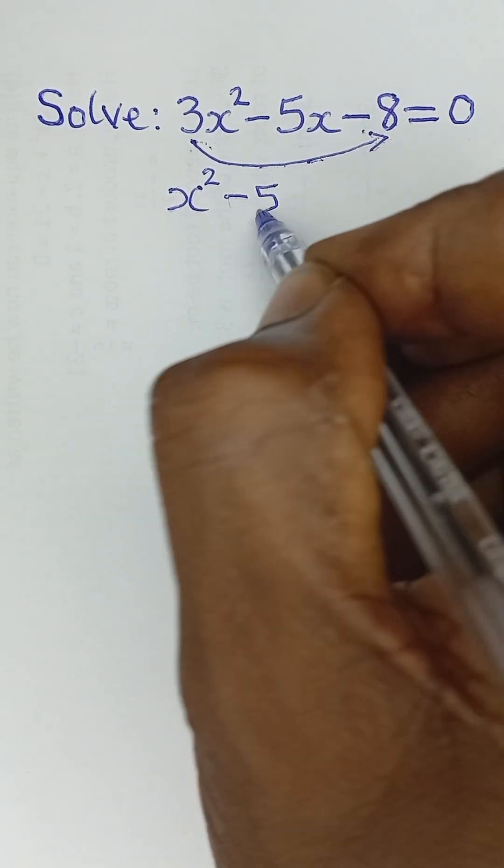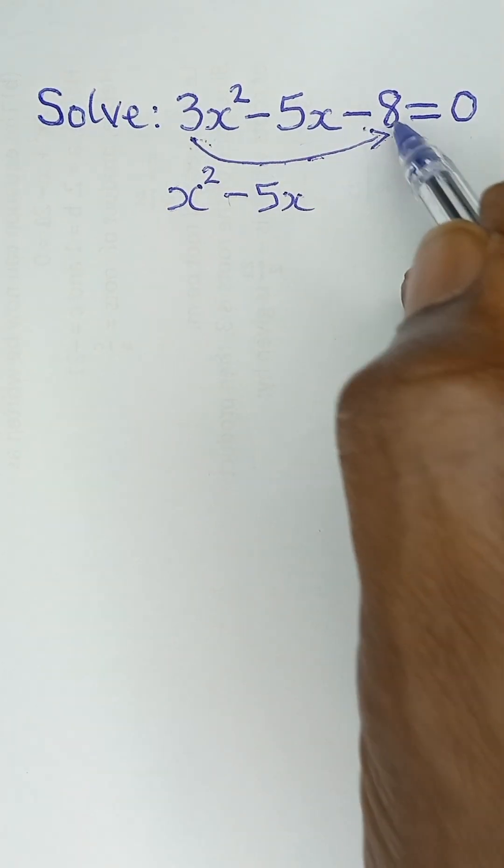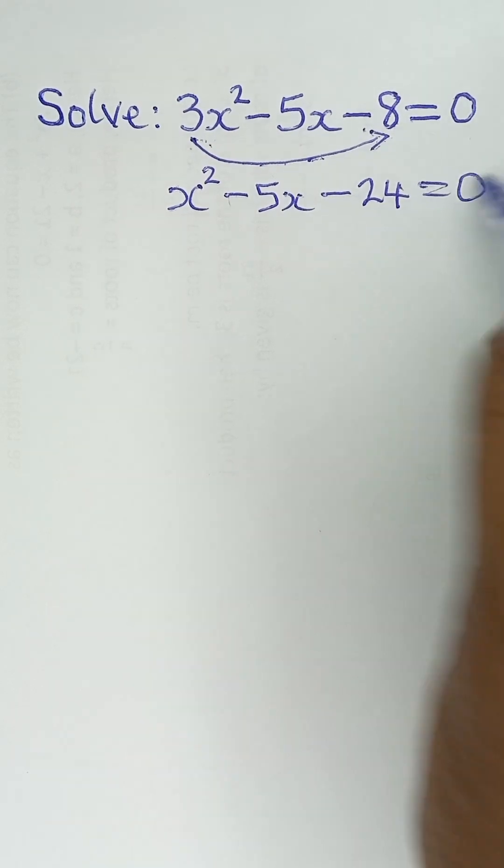And then I say minus 5x, which is what I have here. And then when this 3 multiplies negative 8, it becomes negative 24. And that will be equal to 0.